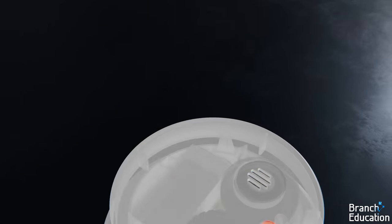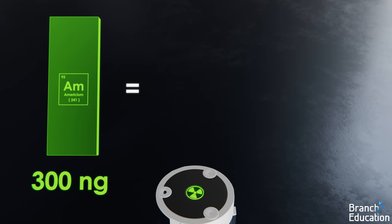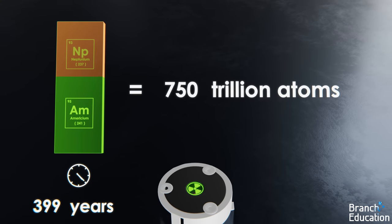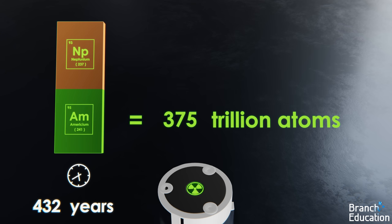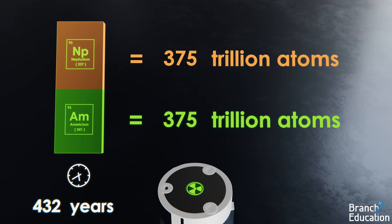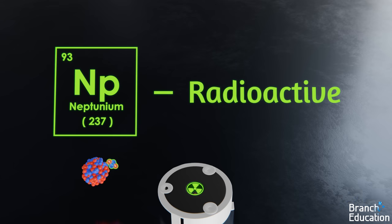In this smoke detector we have 300 nanograms of americium, which equates to around 750 trillion atoms. And over the course of 432.2 years, that number will have decayed into 375 trillion atoms of americium-241 and 375 trillion atoms of neptunium-237. By the way, neptunium-237 is also radioactive and emits alpha particles.